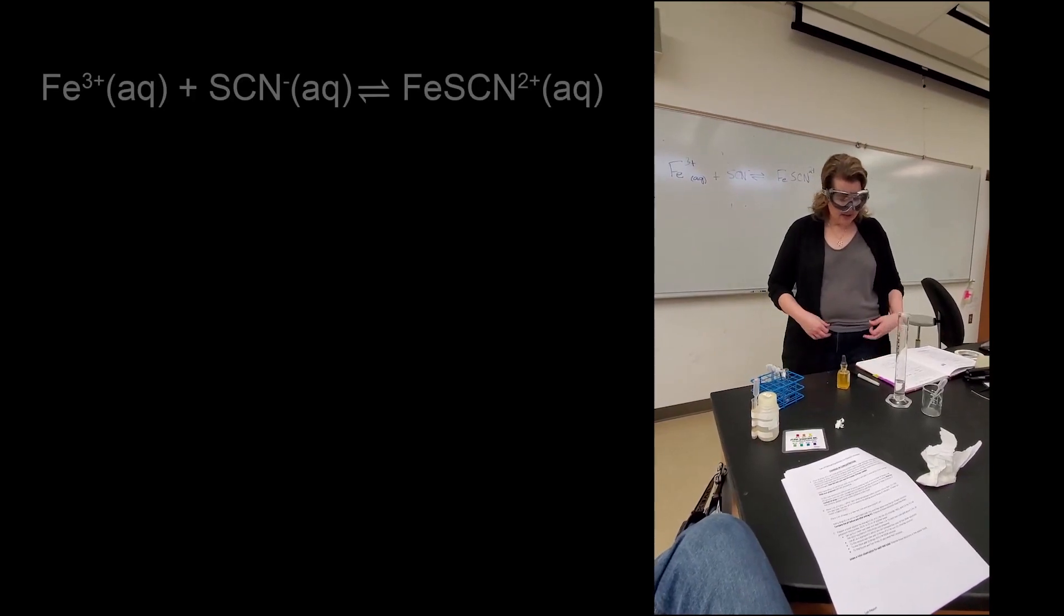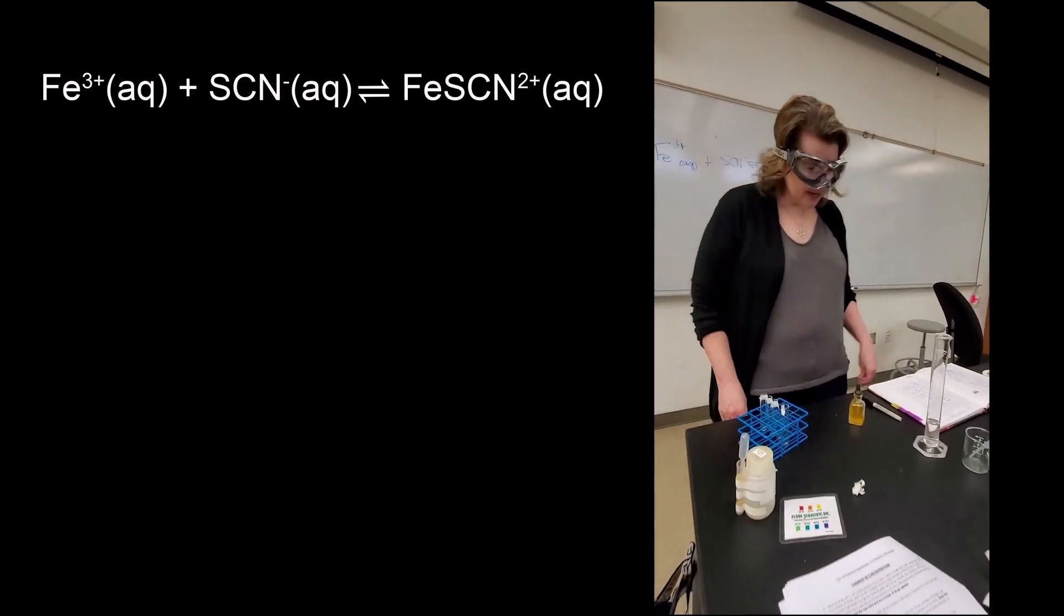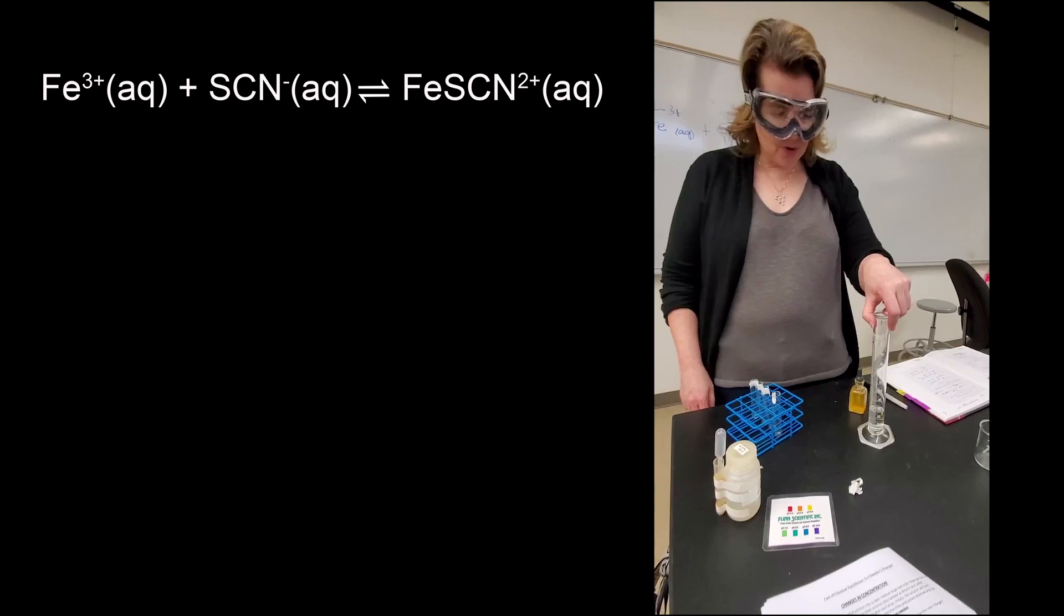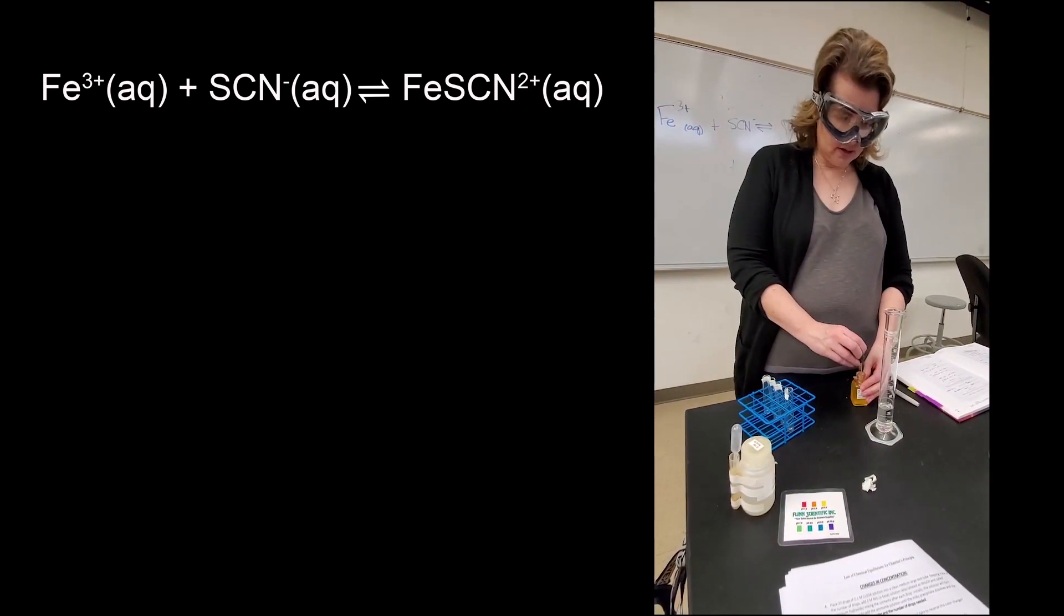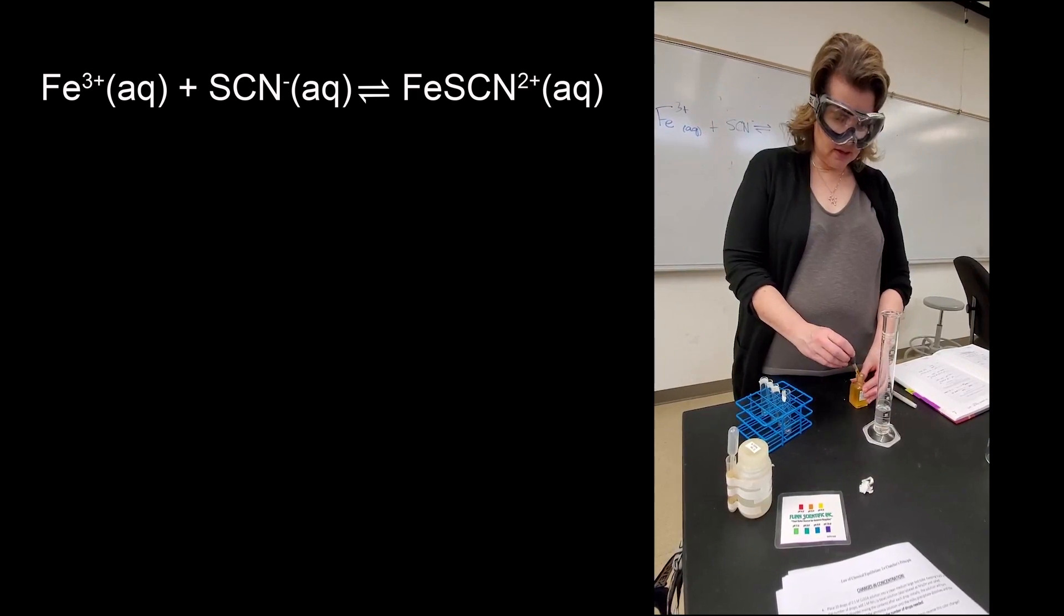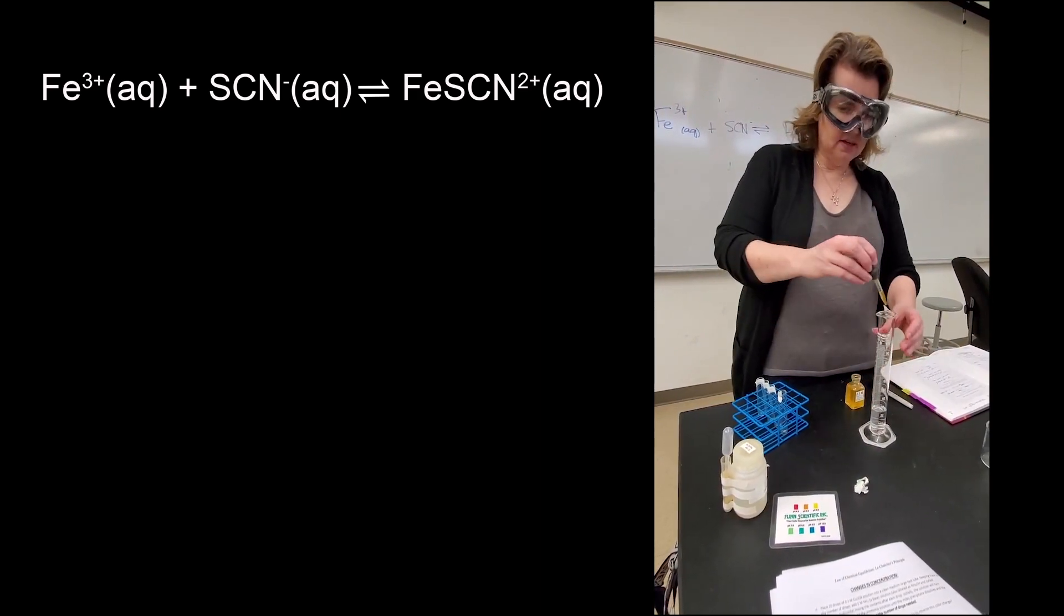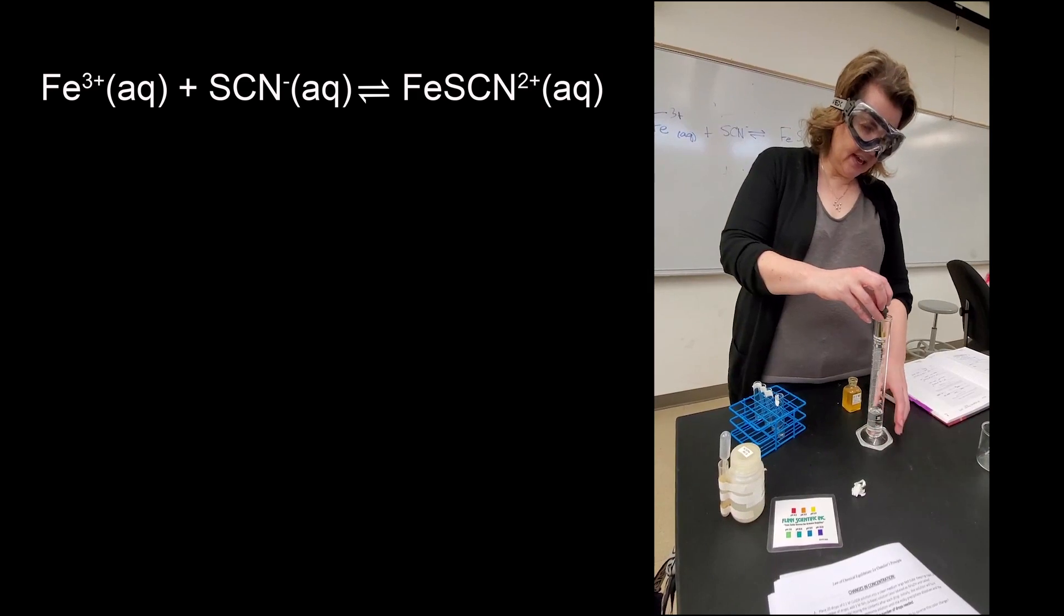So Morgan, this one starts with having us make up a stock solution. Can you tell me what, I already have the 25 milliliters of water. What do I need to put in this? You have your stock solution. You're going to mix in 25 mils of water, half a mil of 0.1 molar iron 3 chloride. Okay, that's good.